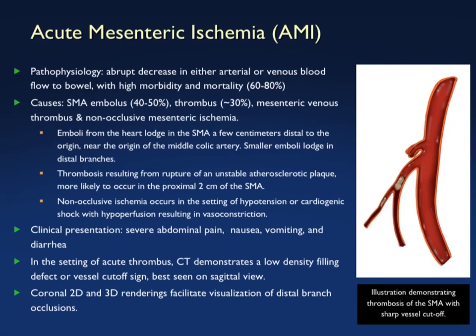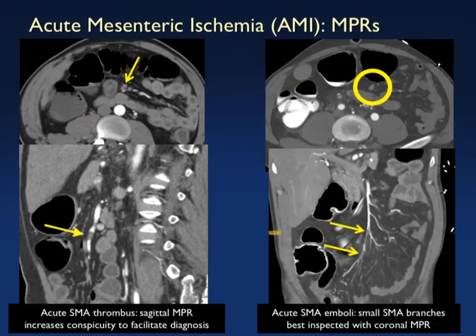Patients with acute mesenteric ischemia often present with severe abdominal pain, nausea and vomiting, and diarrhea. CT in the acute setting demonstrates a thrombus with a vessel cutoff sign, probably best seen on the sagittal view — and often only appreciated there. On axial views you may pick it up in retrospect, but I've seen many cases missed when only axial images are reviewed. For a distal, segmental thrombus, the sagittal view is especially valuable because the vessel runs as a straight line and is very easy to see.